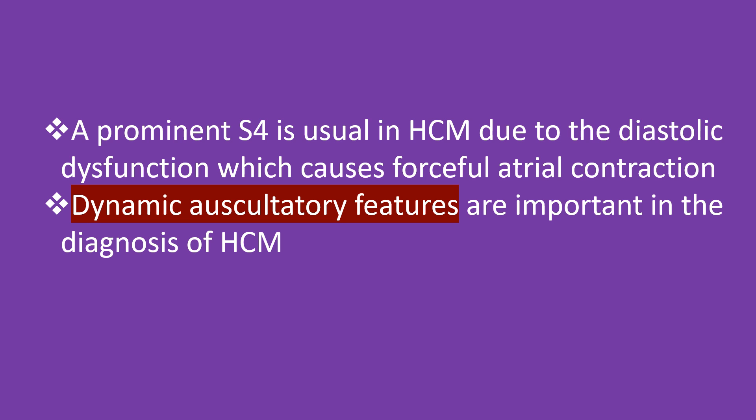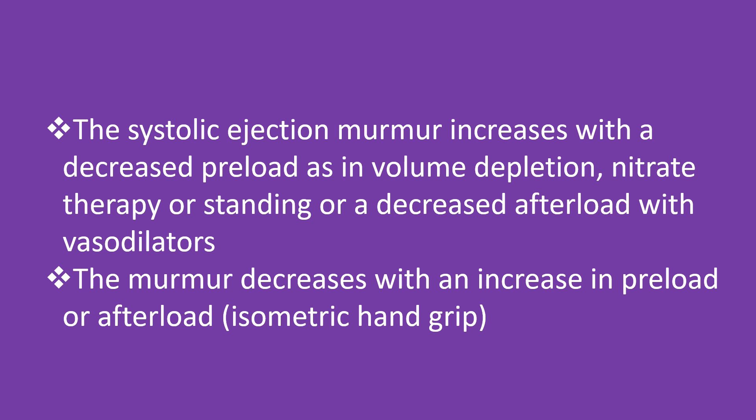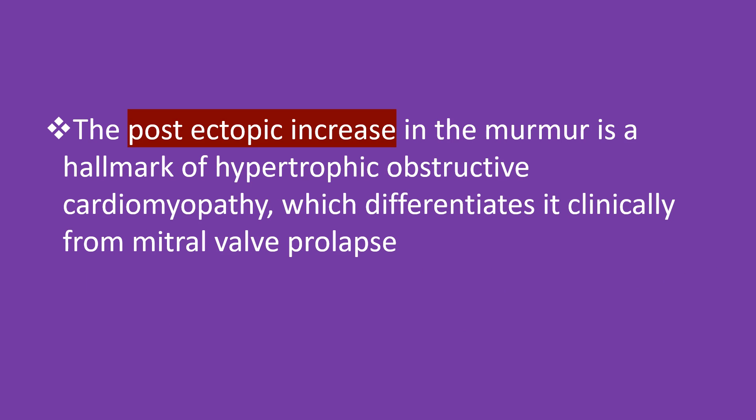A prominent fourth heart sound is usual in HCM due to diastolic dysfunction causing forceful atrial contraction. Dynamic auscultatory features are important in diagnosis. The systolic ejection murmur increases with decreased preload — as in volume depletion, nitrate therapy, or standing — or with decreased afterload from vasodilators. The murmur decreases with increased preload or afterload, such as isometric hand grip. The post-ectopic increase in murmur is a hallmark of hypertrophic obstructive cardiomyopathy, differentiating it from mitral valve prolapse.